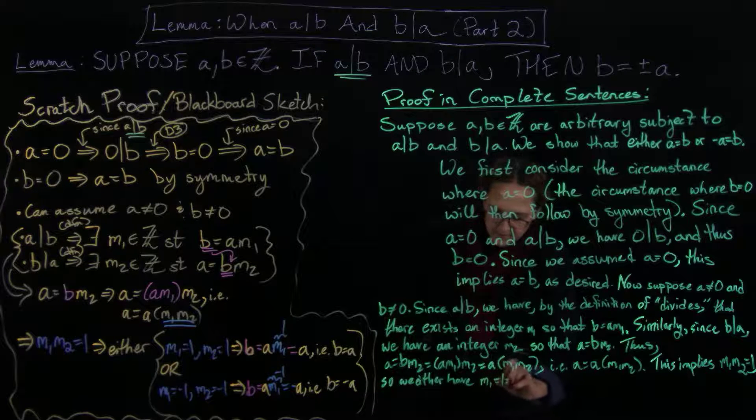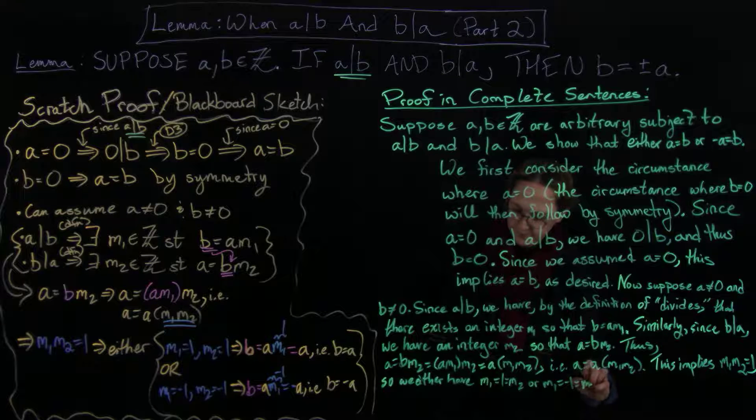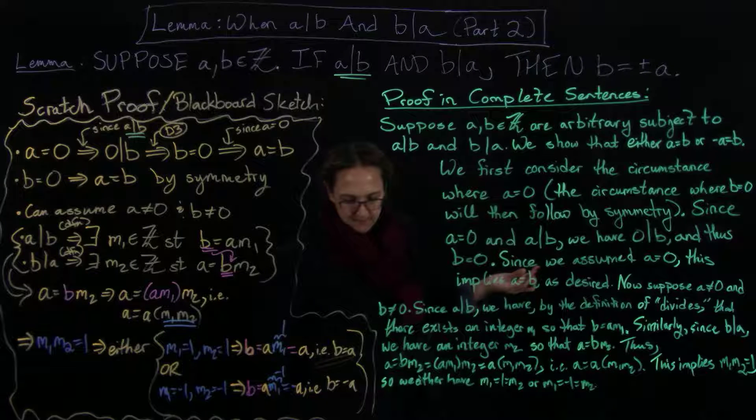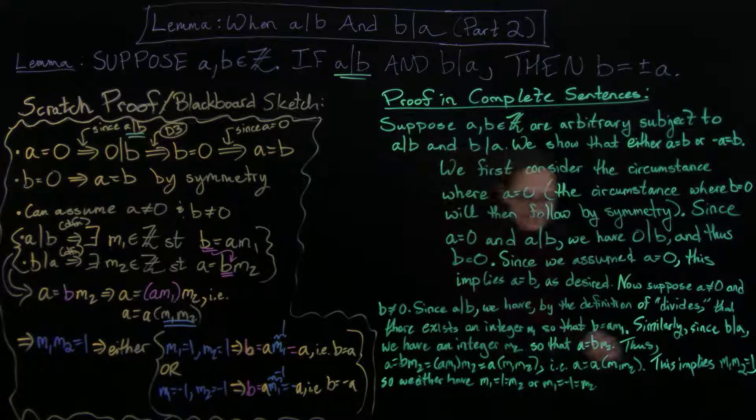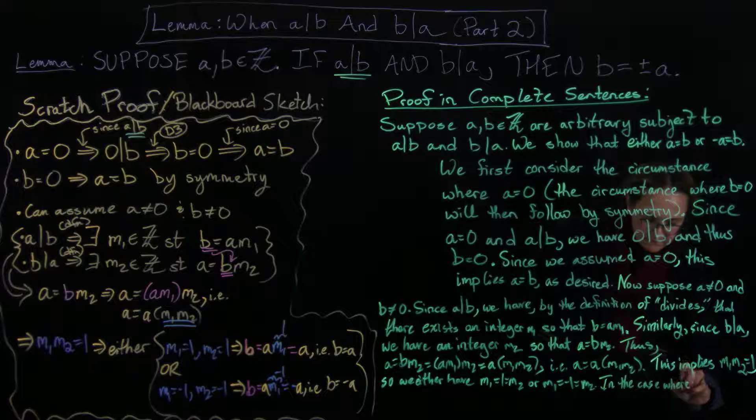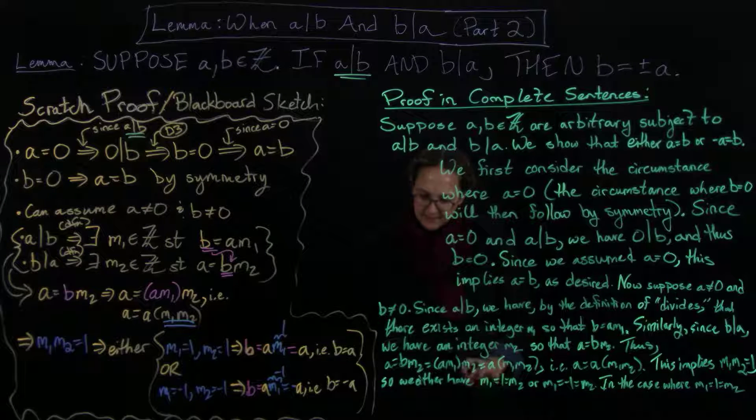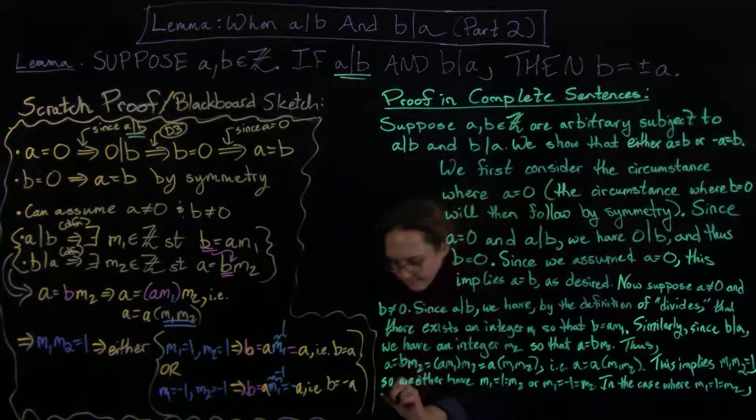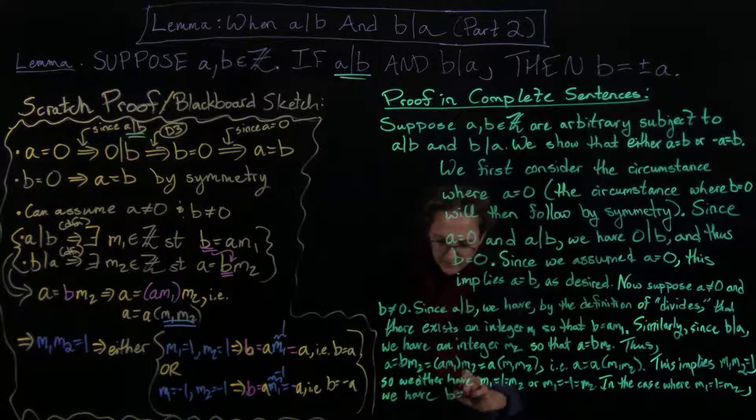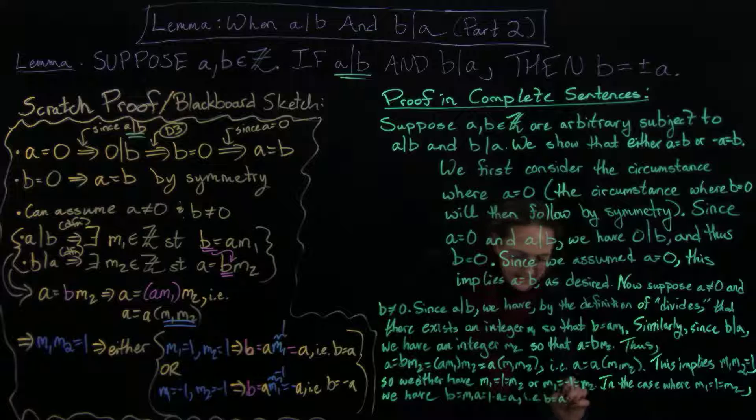So we either have m1 equals one equals m2, or m1 equals minus one equals m2, that they're both one or they're both minus one. So in the case where m1 equals one equals m2, we have B equals M1A equals 1 times A equals A, i.e. B equals A as desired.